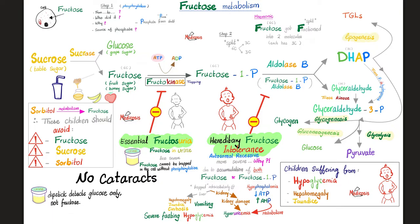There are two relatively common diseases: essential fructosuria and hereditary fructose intolerance. The word 'essential' means primary or idiopathic — doctors use it when they cannot figure out the underlying pathology. In essential fructosuria, the enzyme fructokinase is deficient.